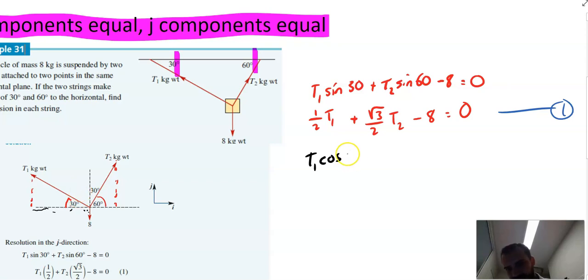I could also have done negative cos of 30, but both ways would work. Plus the tension of string two, and that's just going to be cos of 60. And gravity doesn't play any part here because we're only looking at the i components. So those two vectors together is going to equal zero.